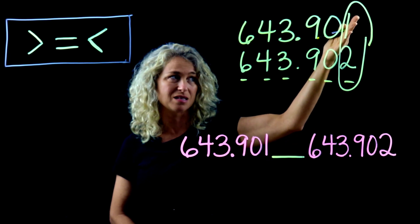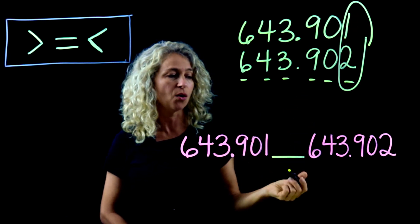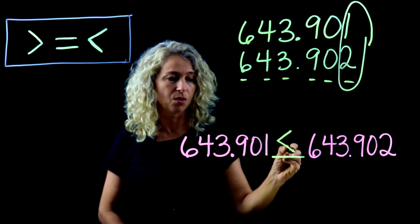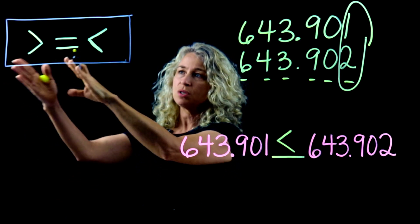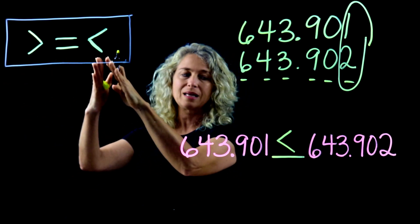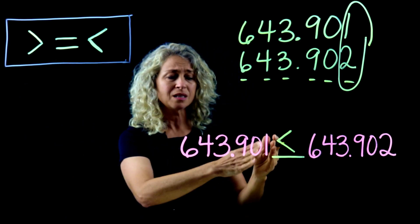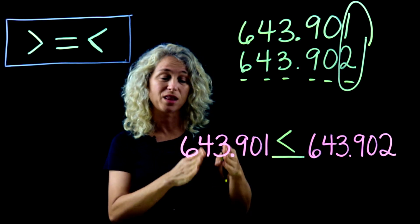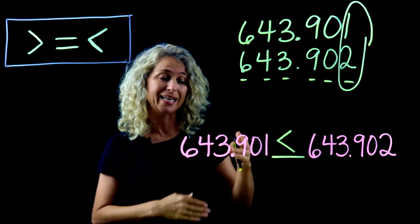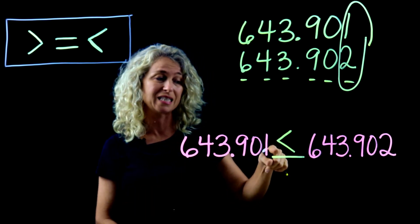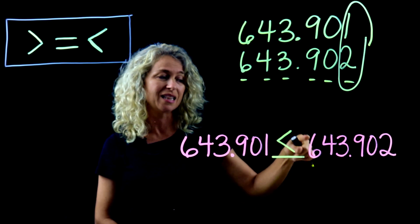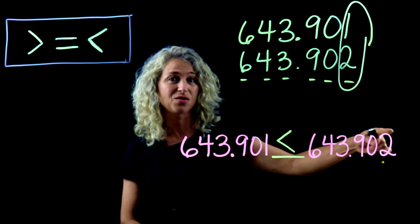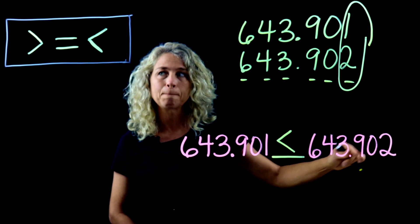These are the two digits we have to compare. It's as simple as looking at one or two — which is greater? Two thousandths is greater than one thousandth. So when you write your comparison symbol, make sure you write less than, because 643 and 901 thousandths is less than 643 and 902 thousandths.